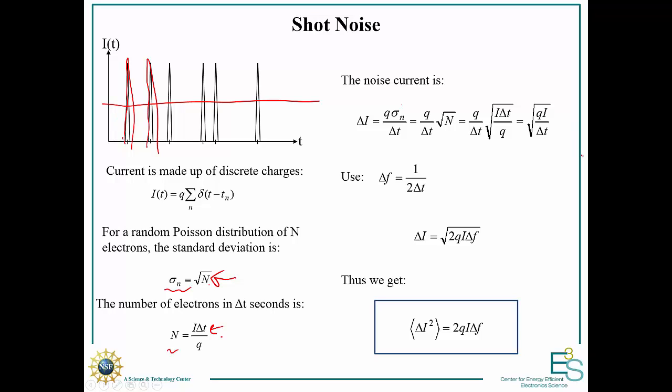To get this per unit bandwidth or per unit frequency, we substitute that the frequency is 1 over the change in time. This gives us that the standard deviation in the current squared is 2qi times delta f. In 1 hertz or 1 bit, our noise current squared is 2q times the current itself.